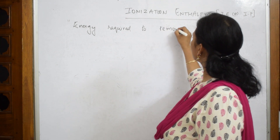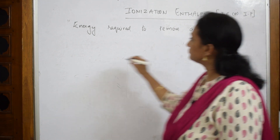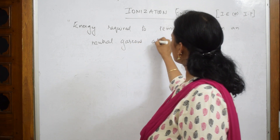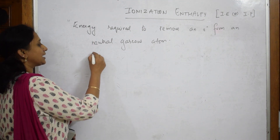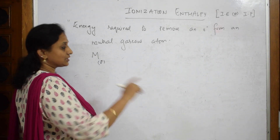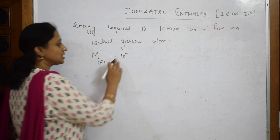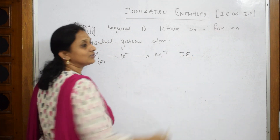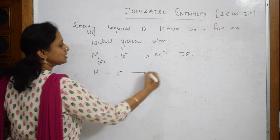It is the energy required to remove an electron from a neutral gaseous atom. So if I have an atom M in the gaseous state, and I remove an electron, it becomes M⁺. The energy required for this is called IE1, ionization energy 1. Removing another electron from M⁺ gives M²⁺, called ionization energy 2.